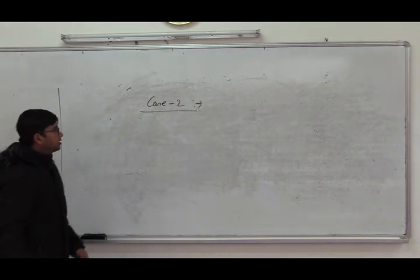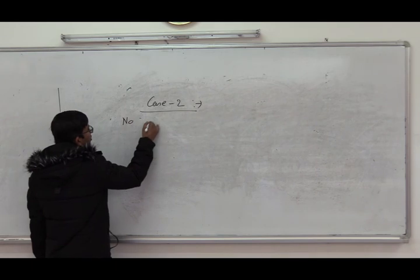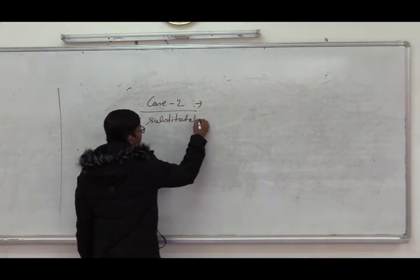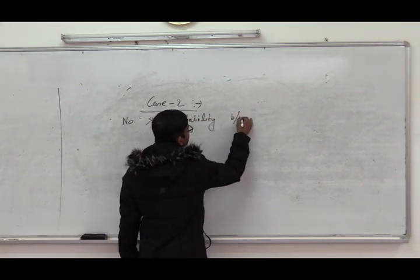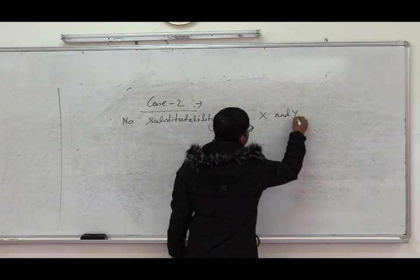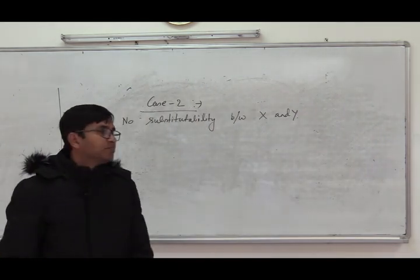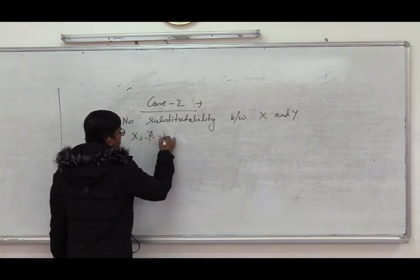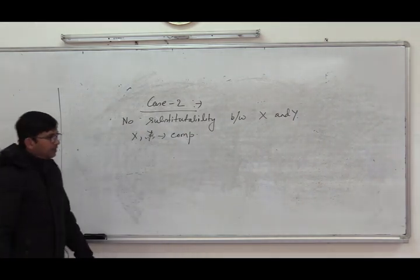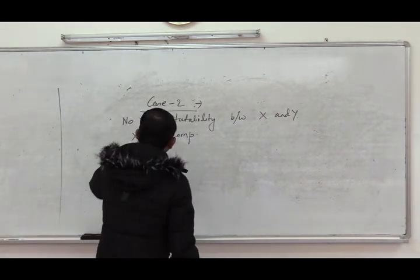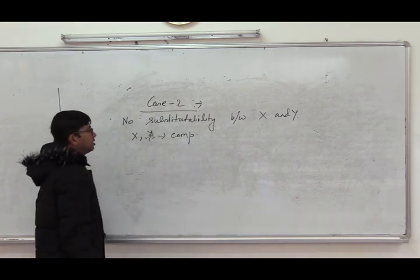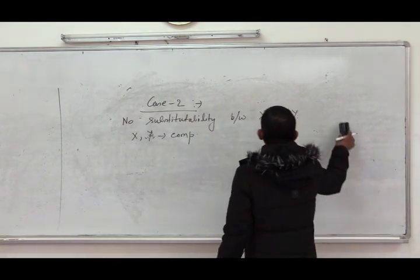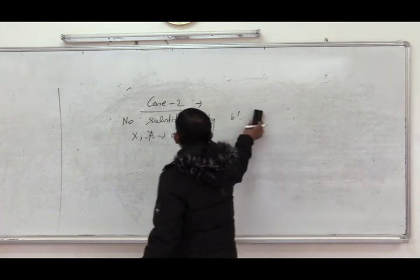Now the second case: we consider no substitutability between commodities. This is the case when the two commodities x and y are complementary goods, so there is no substitutability between x and y. In this case, the community indifference curves will be L-shaped and there will be no chance of exchange gain.